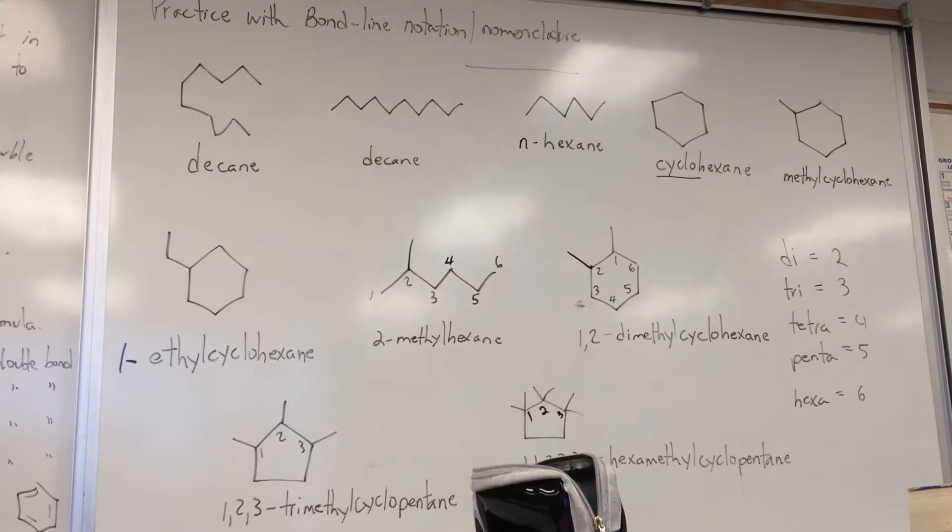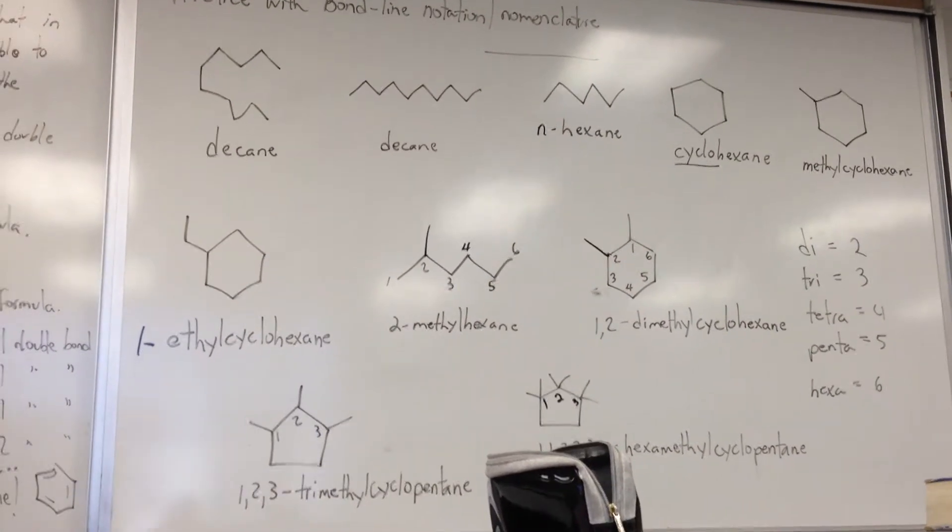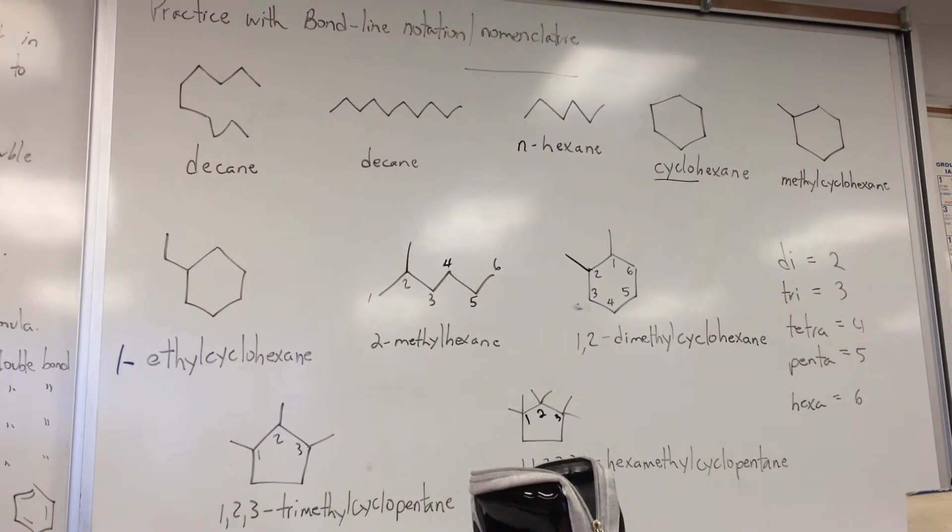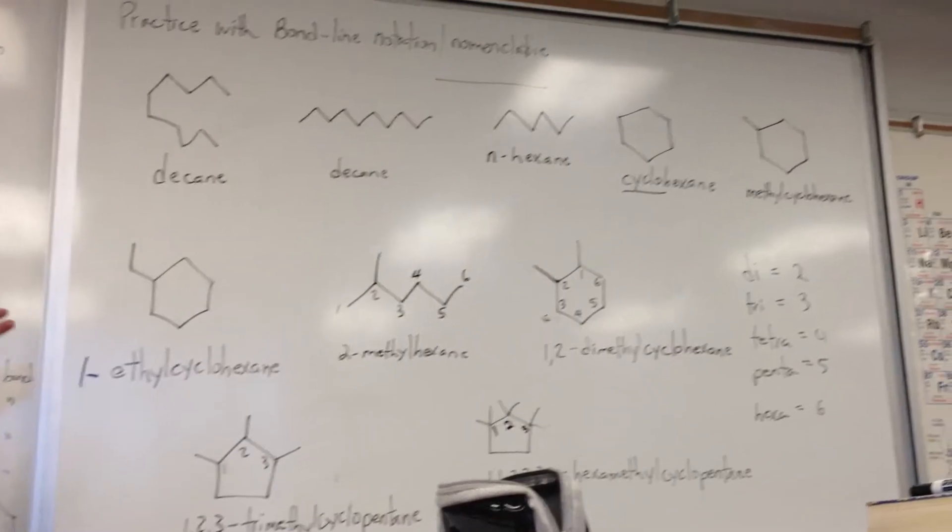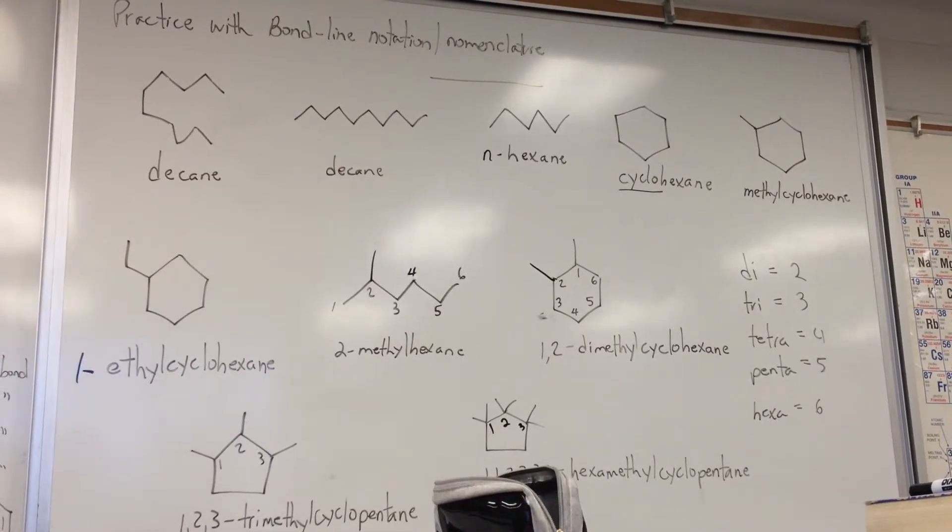If we take, for example, decane, which is part of a homologous series of the simplest alkanes, starting from methane. So we have methane, ethane, propane, butane, pentane, hexane, heptane, octane, nonane, decane - it's 10 carbon atoms.